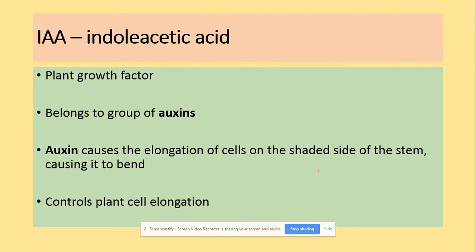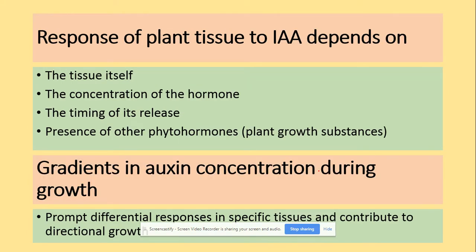The IAA is a plant growth factor that belongs to a group of auxins. The job of auxins is to cause the elongation of cells on the shaded side of the stem, causing it to bend. IAA will control plant cell elongation. The response of plant tissue to IAA depends on the tissue itself, the concentration of the hormone, the timing of its release, the presence of other plant substances, and gradients in auxin concentration during growth, which prompt differentiation responses in specific tissues and contribute to directional growth.